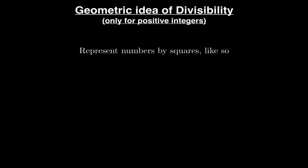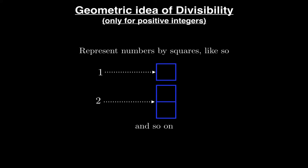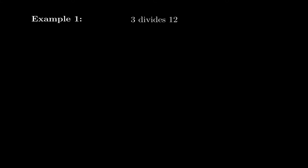This geometric idea is going to work only for positive integers. We're going to represent numbers by squares — the number one is represented by one square, the number two by two squares, and so on. Now divisibility, as the name indicates, is like one number dividing another, and you're going to see why the name is like that.